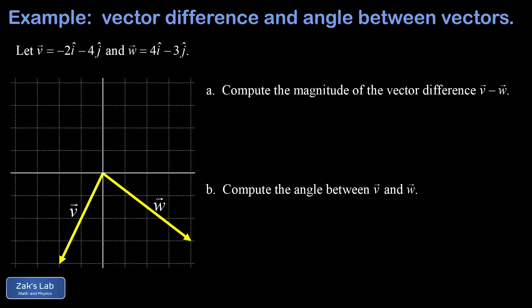In part b we're asked to find the angle between v and w. If you recall, that's related to the dot product of these two vectors. Let's get started with our vector difference. For v - w, we just plug in the component form of these vectors.